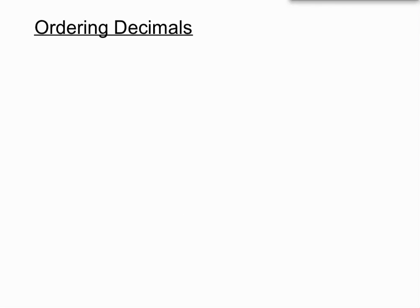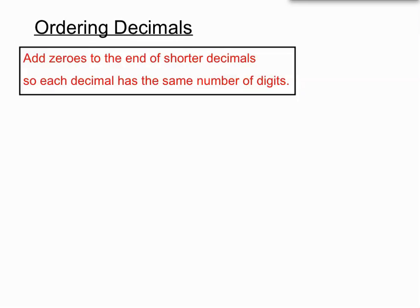When we are asked to put decimals in a certain order, what is very helpful is to add zeros to the end of the shorter decimals so that each decimal has the same number of digits. Then it's easier to compare.